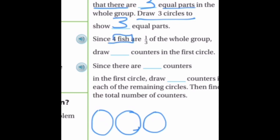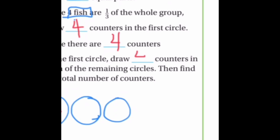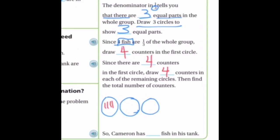Since there are four fish that are one third of the whole group, we're going to draw four counters in the first circle: one, two, three, four. You can draw little circles or just write the number four. Since there are four counters in the first circle, we're going to draw four in the others. Those red markers represent the clownfish; the other four in each circle are some other kind of fish.